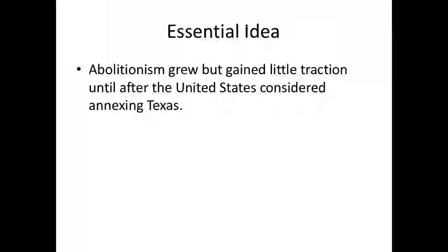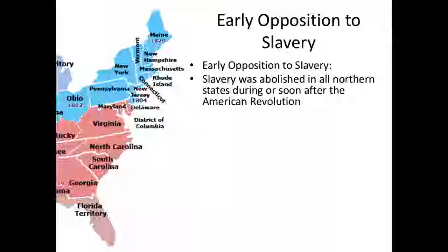The two themes — abolitionism and the annexation of Texas — go hand in hand because they both relate to the controversy over slavery in the western part of the United States. So let's talk about the rise of abolitionism first. Abolitionism for a long time was a small, vocal minority movement. Not a lot of people got into it until things like the Second Great Awakening and the possibility of annexing Texas came up.